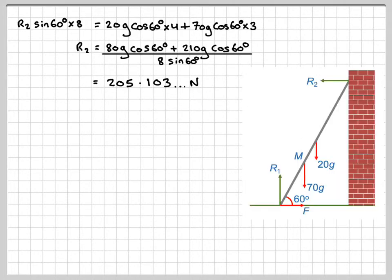Right, look at the diagram now. We're now just going to resolve vertically. So, this way. So, what we've got acting upwards, we've got R1 acting upwards, and then acting downwards, we've got 20G. So, we're going minus 20G and 70G.